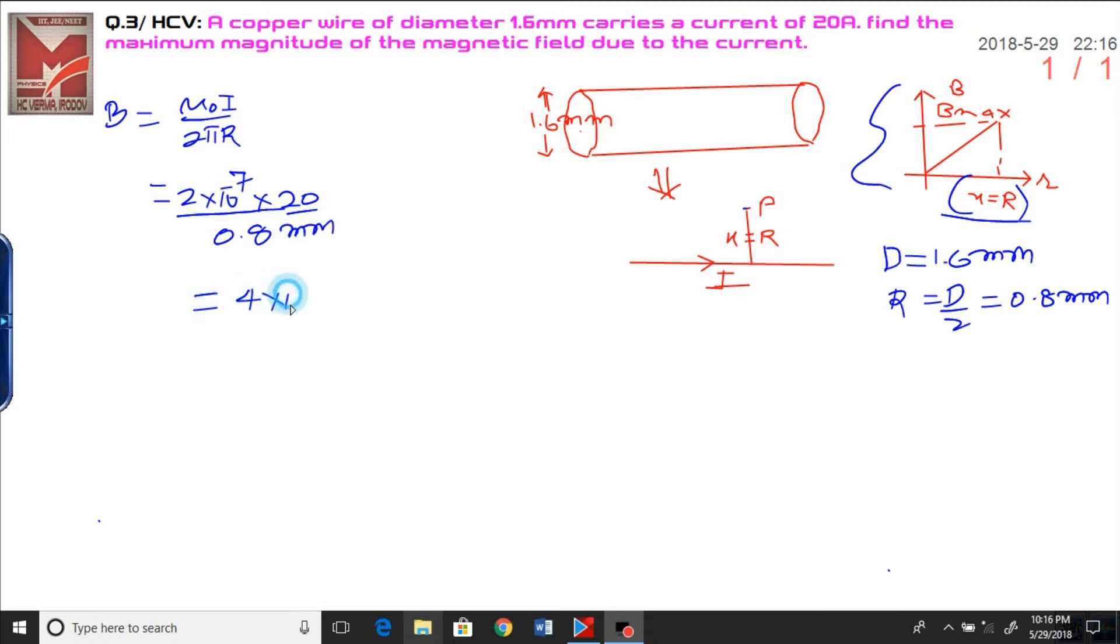Now, you have to simplify it: 4 into 10 raised to power minus 6 upon 8 into 10 raised to power minus 4, and finally that will be 1 by 2 into 10 raised to power minus 2. And the net maximum magnetic field you will get here, that will be 5 into 10 raised to power minus 3, not 5 mm - 5 milli tesla, or simply you can write 5 into 10 raised to power minus 3 tesla. This is the answer.